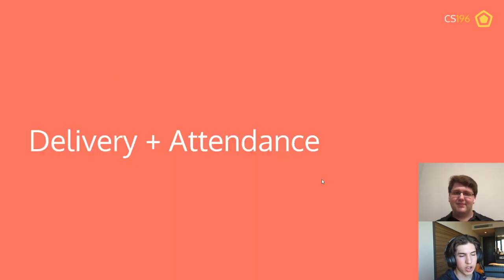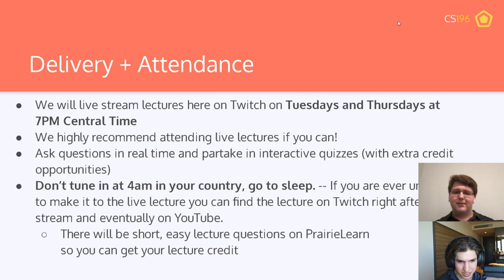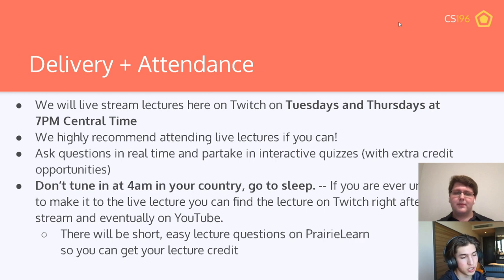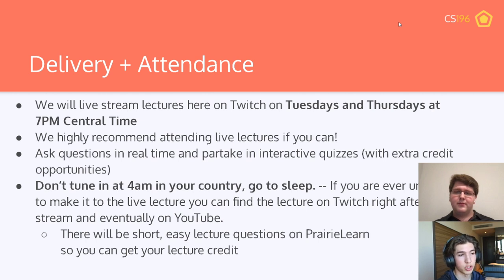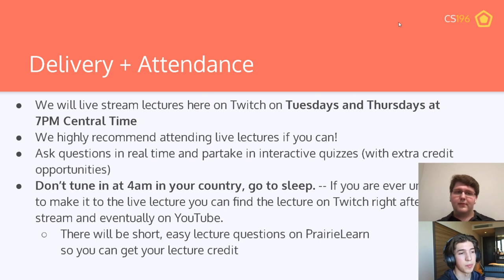We stream lectures live on Tuesdays and Thursdays at 7 p.m. Central Time. We recommend attending live because you can ask questions, but if you can't — don't tune in at 4 a.m., please go to sleep. For tracking attendance during the live lecture, we have our own Discord bot that will log your reactions. Alternatively, if you miss the poll or are watching this recorded, we'll also have a PrairieLearn quiz with the same questions. Attendance is counted either synchronously or asynchronously — you only need to do one.